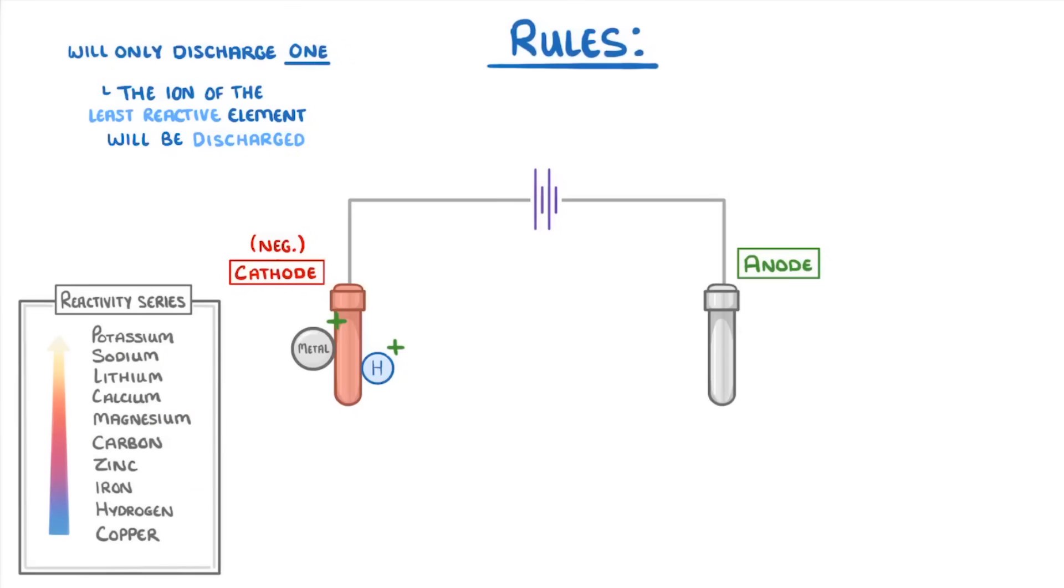Over at the anode, which has a positive charge, we have a similar problem. As well as the negative ion from our compound, which could be something like a nitrate ion or a bromide ion, we'd also have hydroxide ions. This time though, the rule to decide which will be discharged is a bit easier.